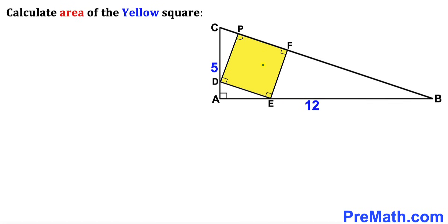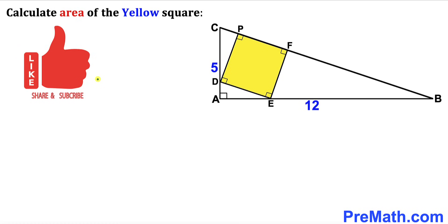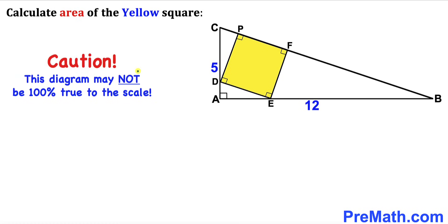Welcome to pre-math. In this video we have a yellow square fully inscribed in a right triangle ABC, such that the side lengths of this right triangle ABC are 12 and 5 respectively. Our task is to calculate the area of this yellow square. Please don't forget to give a thumbs up and subscribe. Please keep in mind that this figure may not be 100% true to the scale.